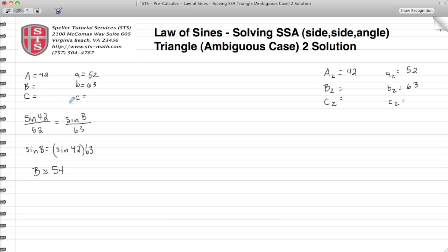For angle B, we're taking the sine of B, which we don't know, dividing that by 63. Cross multiply to get this equation here, and then we take the arc sine of both sides to find out that B is approximately 54 degrees.